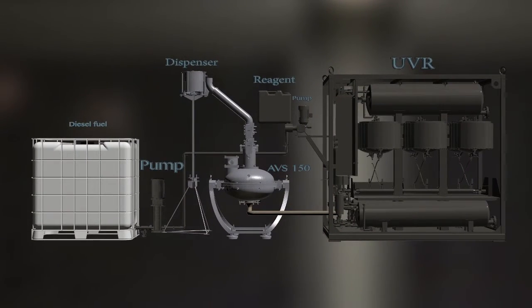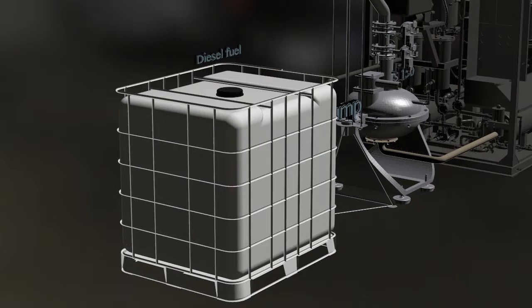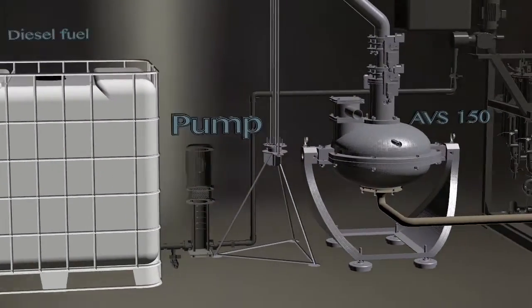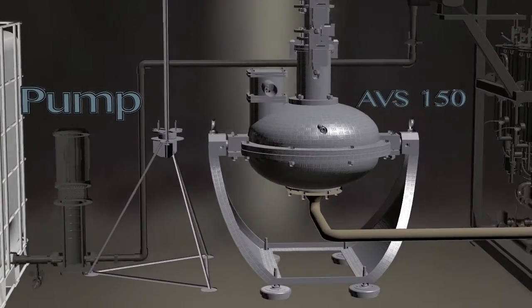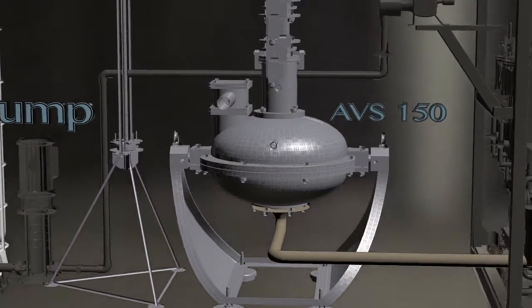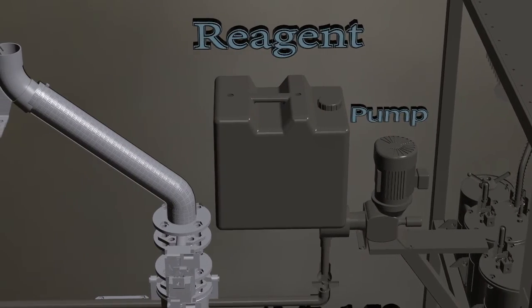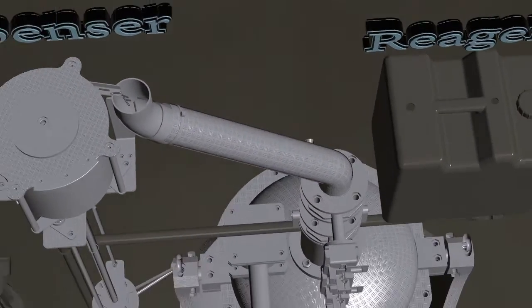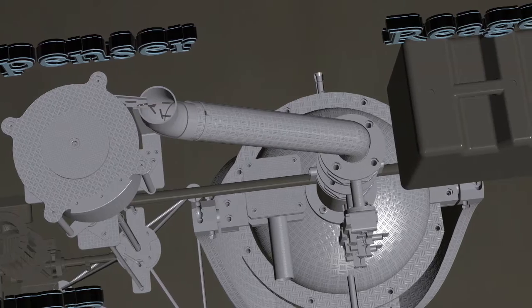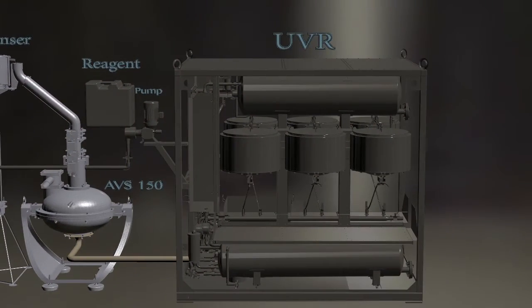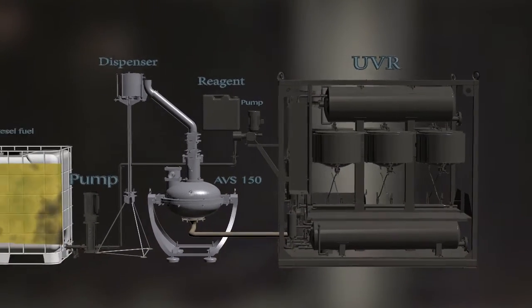The flow chart of cleaning diesel fuel of sulfur consists of a tank with a volume of 1 cubic meter, a pump for pumping fuel from a tank into an AVS150 vortex layer device with a measuring pump for supply in a reagent, a dispenser supplying the ferromagnetic particles into the working chamber of AVS150 vortex layer device, and UVR vacuum regeneration unit.